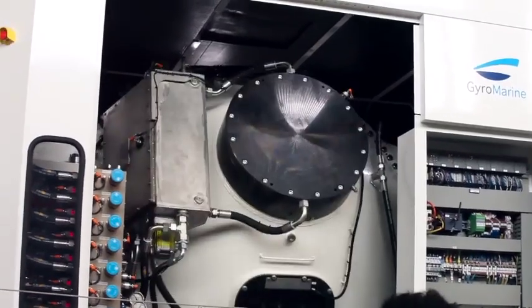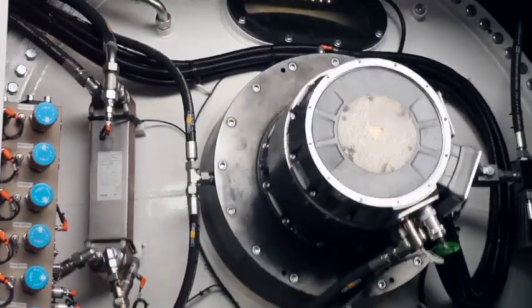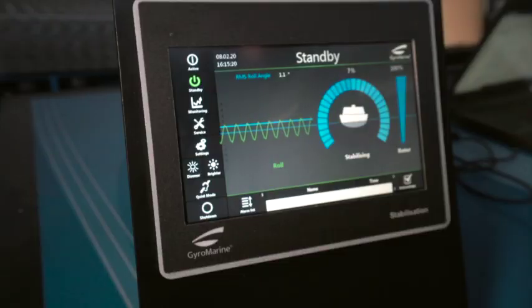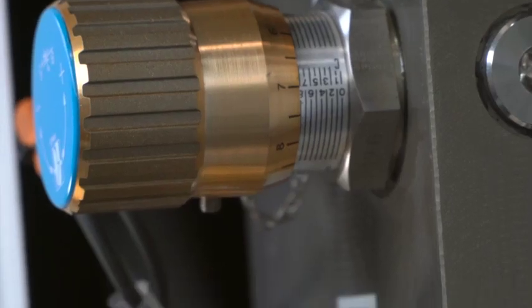Thanks to an exclusive active drive technology, the GyroMarine gyroscopes drastically reduce the roll of vessels 40 to 100 meters in length or more.